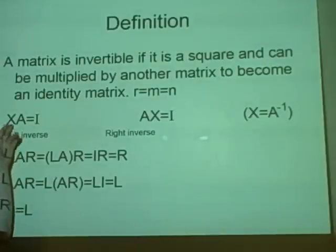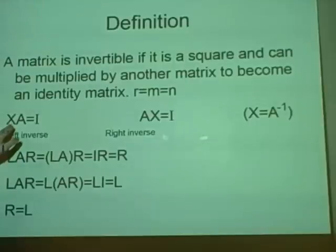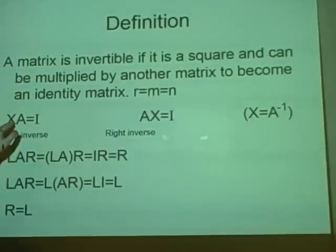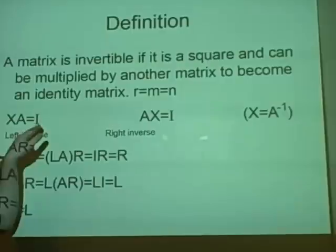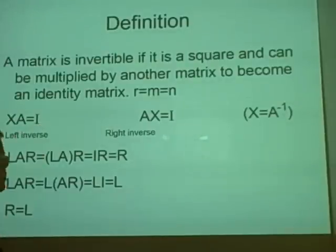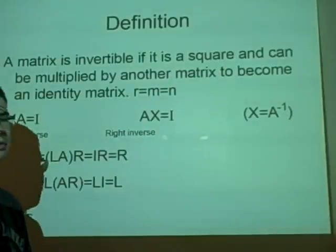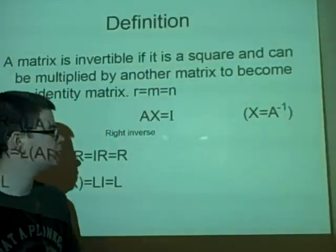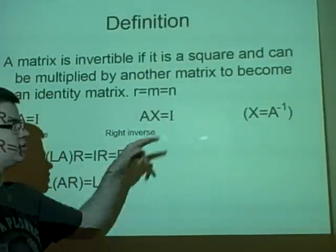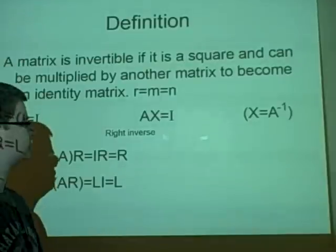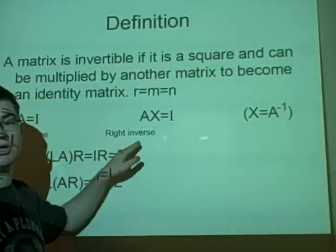So if you have a matrix and you multiply it by another matrix X in the form XA, and it equals the identity matrix, then X is the left inverse. Similarly, AX equals the identity matrix is known as the right inverse.